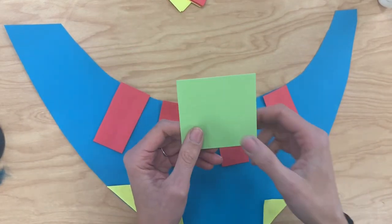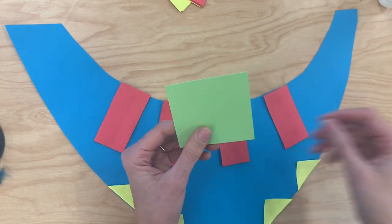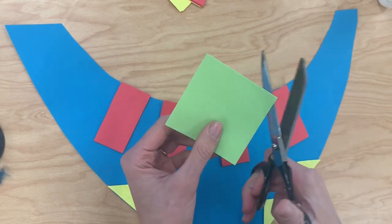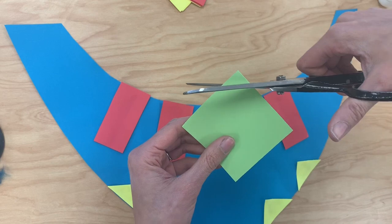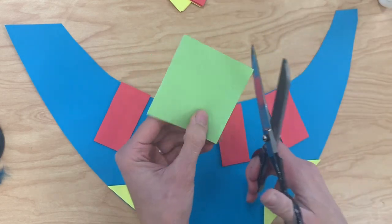Now the last shape we're going to talk about making is a circle and for a circle what I'm going to do is just cut off each of the corners here and then round it out.